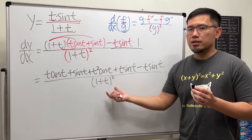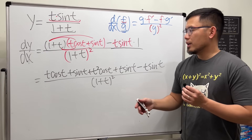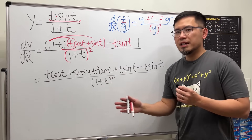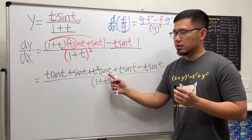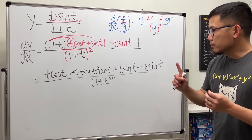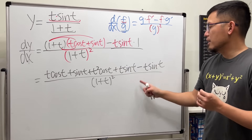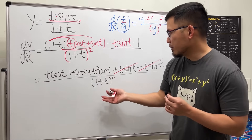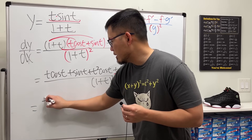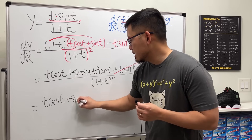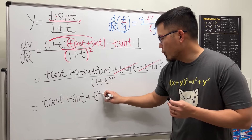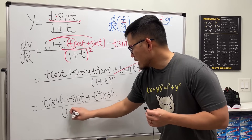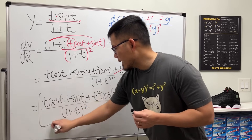Usually you do not have to multiply out the denominator, because the idea is to combine the top and see if anything cancels. So don't multiply it out — you can just leave the answer with the factored denominator if nothing cancels. We see that positive t sine t and negative t sine t cancel out. And that's pretty much the final answer: t cosine t plus sine t plus t squared cosine t, all over 1 plus t squared.